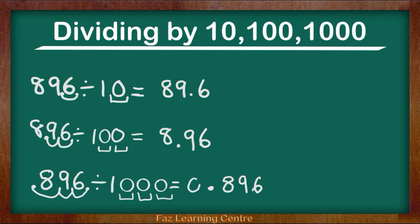And here, what we are going to do is we are going to put a zero. The reason why we are putting a zero is because zero means nothing. So 896 divided by 1000 equals 0.896.